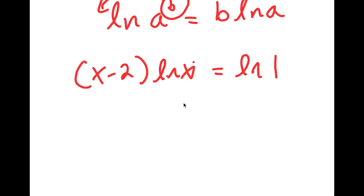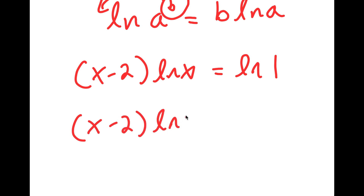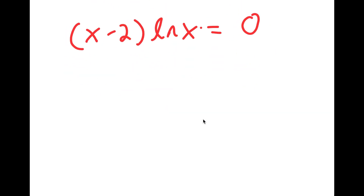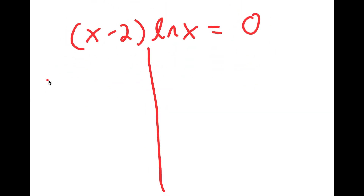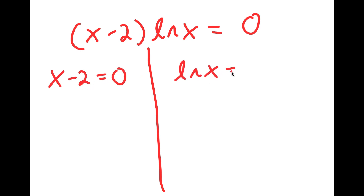Now, ln 1 is actually equal to 0. So I get x minus 2 times ln x is equal to 0. This gives me two equations: x minus 2 equals 0, and also ln x is equal to 0.